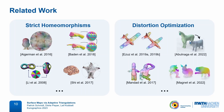On the other hand, there are methods that do optimize some form of distortion measure, but they usually relax the notion of homeomorphisms — for example, by only mapping at the vertices, or mapping not exactly to the target surface but to the ambient space around it, or by mapping between distributions of functions instead of points. Usually this means losing continuity and bijectivity guarantees.